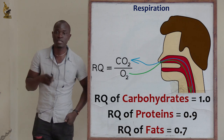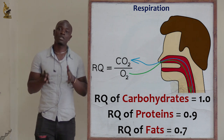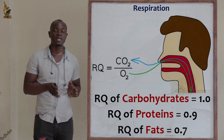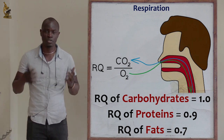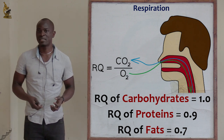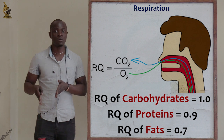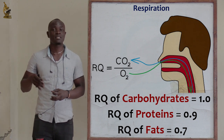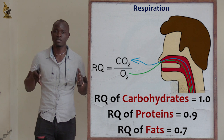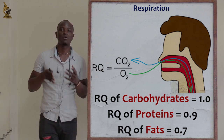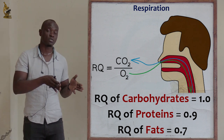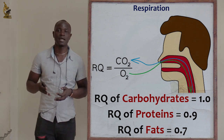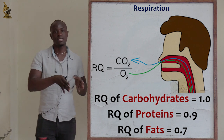The respiratory quotient of carbohydrates is equal to 1. This is because carbohydrates are completely broken down during respiration, so the carbon dioxide produced balances with the oxygen used. This implies that aerobic respiration is taking place, and the RQ is always equal to 1 for carbohydrates.